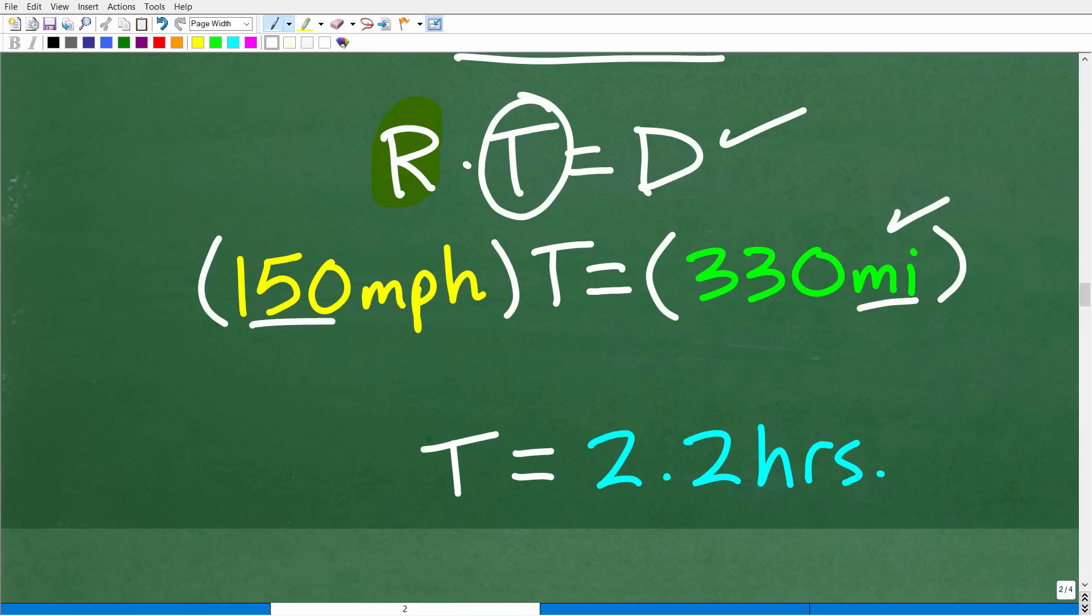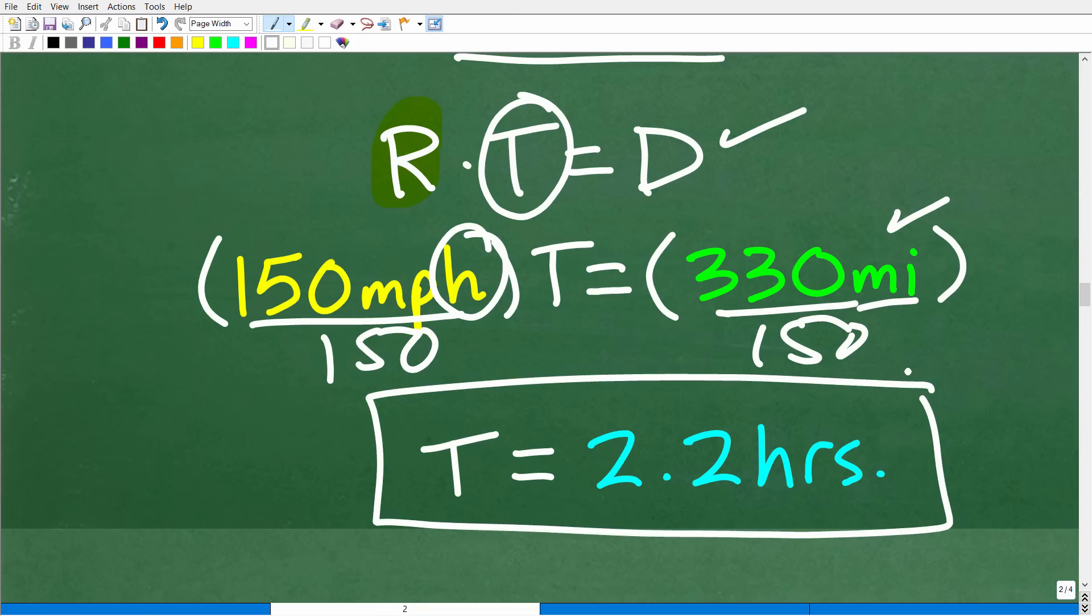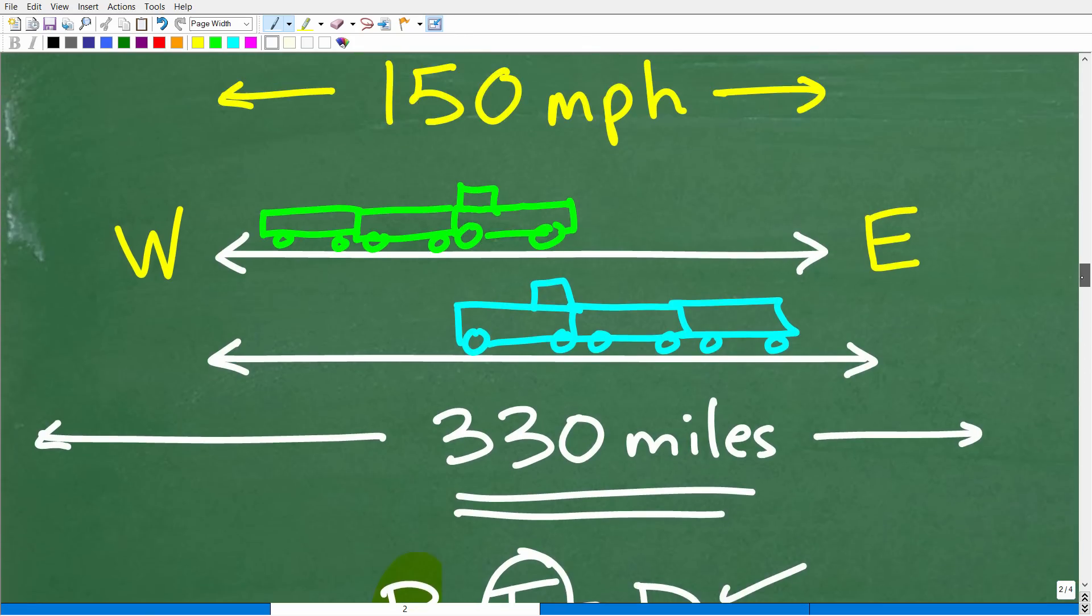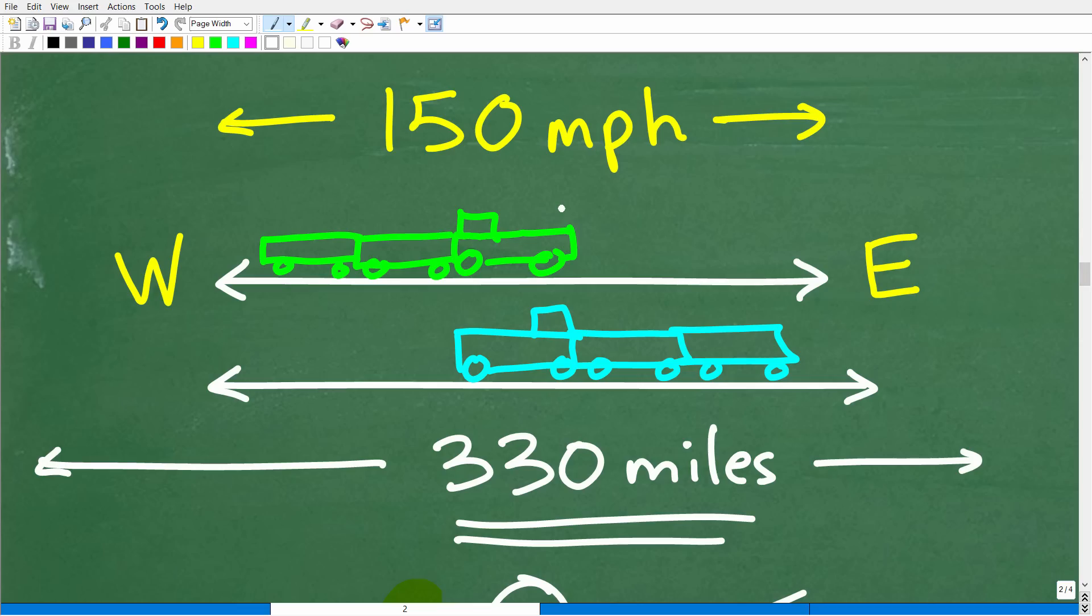So how do we solve this basic lovely algebra equation? Pretty straightforward stuff. All we have to do is divide both sides of the equation by 150. So 330 divided by 150 is 2.2. But what 2.2 what? Hours. Okay, so that is the solution.